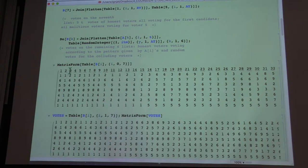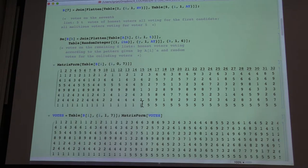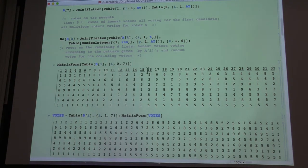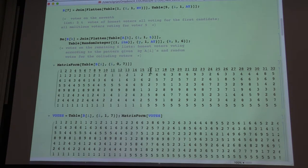So you can see here voters between 1 and 15 all vote for the first person on the seventh list, right? And so the first 15 voters are honest, legitimate voters.